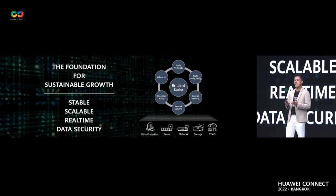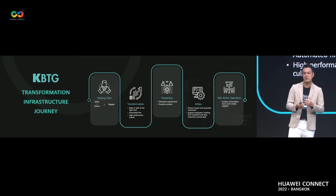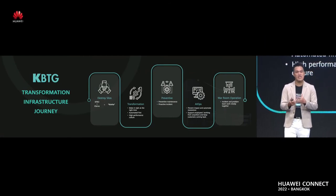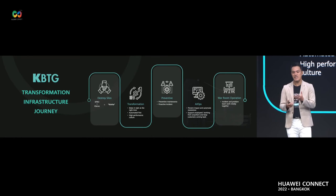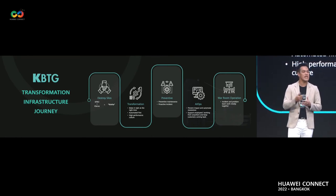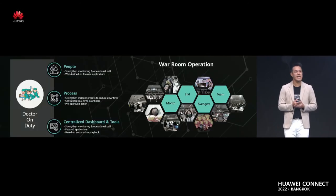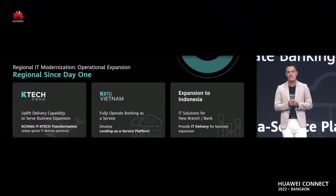We merge the two — we destroy silos and blend them together. Then we transform ourselves from doing things manually into automated systems. We also use data and AI to help us with preventive maintenance, and we have strong warm operations.